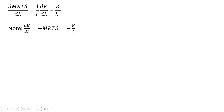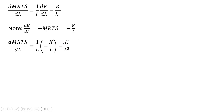Now note that the derivative of capital with respect to labor is just the slope of the isoquant. And the slope of the isoquant is just minus the marginal rate of technical substitution. We know in this problem the MRTS, when we took the marginal product of labor divided by the marginal product of capital, gave us K divided by L. So the slope of the isoquant — the derivative of capital with respect to labor — is just minus the MRTS, which is minus K divided by L. Making that substitution where we have DK over DL, we replace that with minus K divided by L.